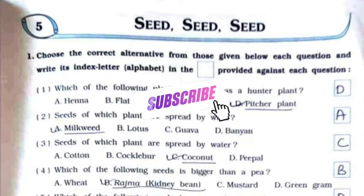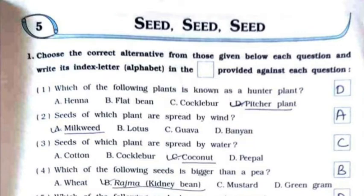We'll be starting with the MCQs. First: which of the following plants is known as a hunter plant? It's option D, pitcher plant. Second: seeds of which plant are spread by wind? It's option A, milkweed. Third: seeds of which plant are spread by water? It's option C, coconut.